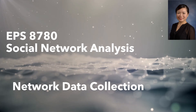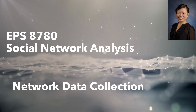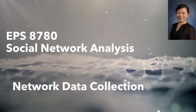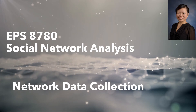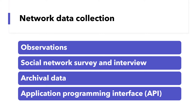Today, we'll learn how to collect data for social network analysis. We'll introduce different ways to collect data for social network analysis research. They include observation, social network survey and interview, archival data, and application programming interface, also known as API.